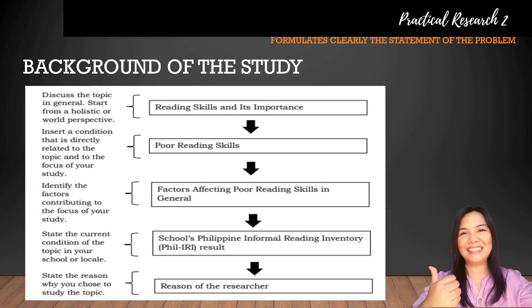Prior to writing and reading various literature studies, making an outline is a helpful tip. Here is an example of an outline of the background of the study. First, discuss the topic in general from a holistic or world perspective — for example, reading skills and their importance. Next, insert a condition directly related to the topic, such as poor reading skills. Then identify the factors contributing to the focus of your study, like factors affecting poor reading skills in general. Next, state the current condition in your school or locality — for example, the school's Philippine Informal Reading Inventory (PHIL-IRI) result. You can also state the reason why you chose to study the topic.